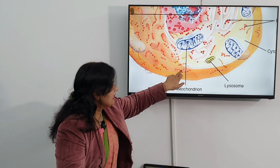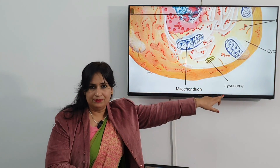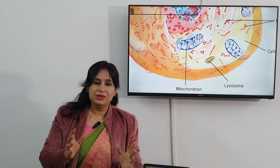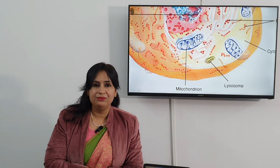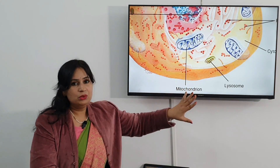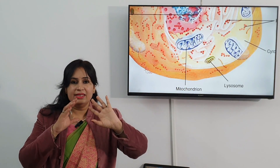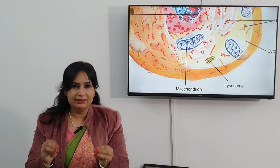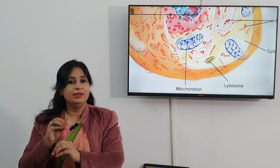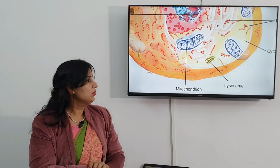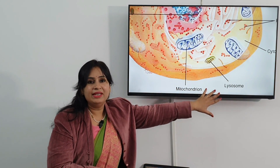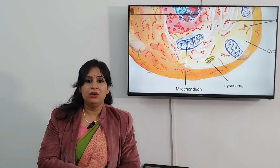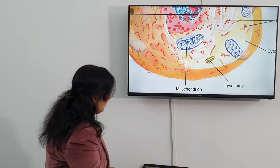Next we can see the structure here — lysosomes. Lysosomes contain various kinds of digestive enzymes which help the cell to digest those cell organelles or whatever cell inclusions are present which are not functioning in the cell. These digestive enzymes are present in lysosomes, that's why we call them the suicidal bags of the cell.